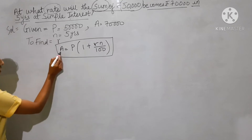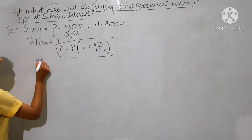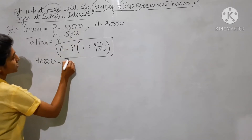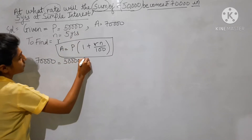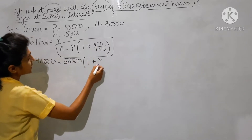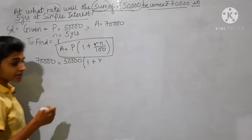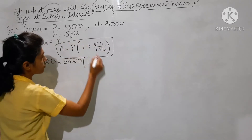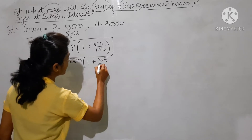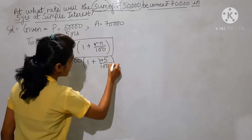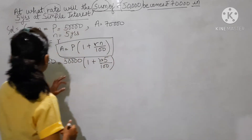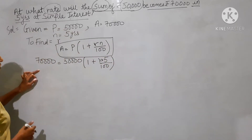Now put the values as per the formula. A is how much? 70,000. P is 50,000. Bracket 1 plus r — as it is because we have to find r — n is how much? 5. So it becomes r into 5 divided by 100, bracket close.